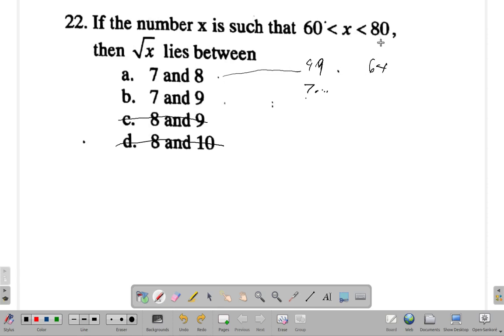8, 8 is 64. That means the square root of 64 would be 8. But can we go any higher? Here, 9, 9 is 81. But the square root of 80 would be 8 point something.